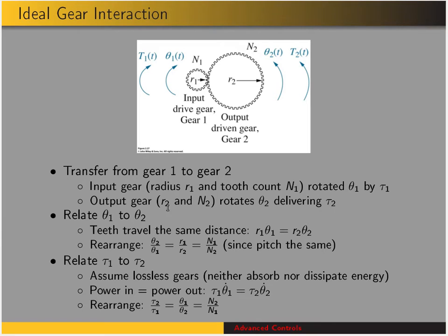Now we look at input torque to output torque. We assume lossless gears — they neither absorb nor dissipate energy, so no inertia and no friction. That means input power equals output power: torque times speed equals torque times speed. Rearranging, output torque over input torque equals N2 divided by N1.